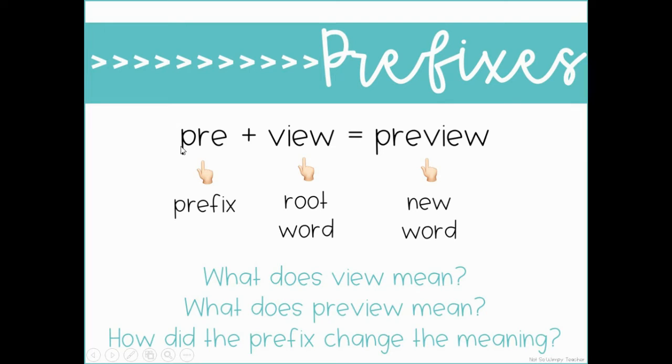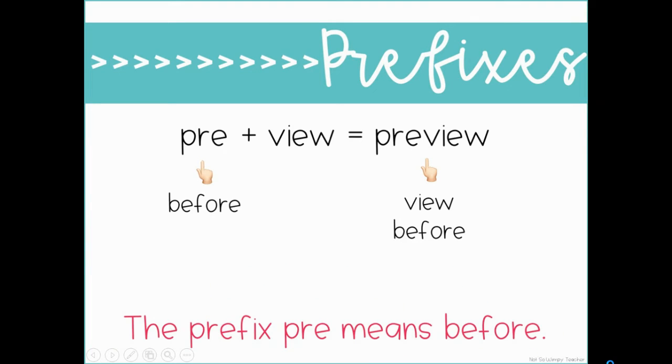We have another prefix, the prefix pre. That's the prefix. Pre is the prefix. View is the root word. When we put them together, they make preview. That's the new word. What does view mean? View means to see something, to look at something. What does preview mean? To look at something before. So how did the prefix change the meaning? The prefix pre means before. You're going to view before.